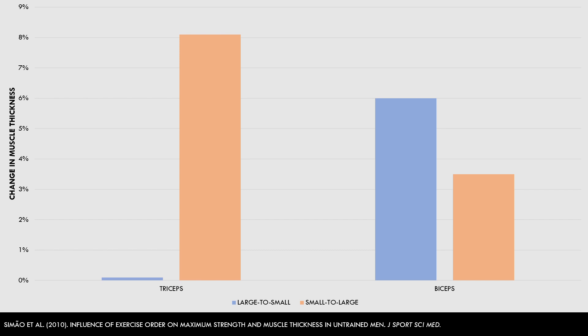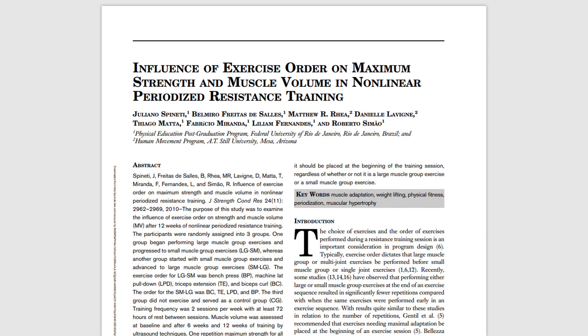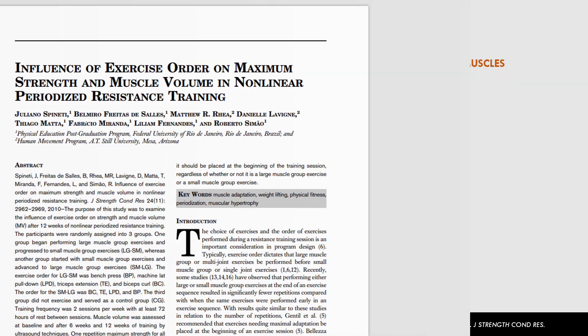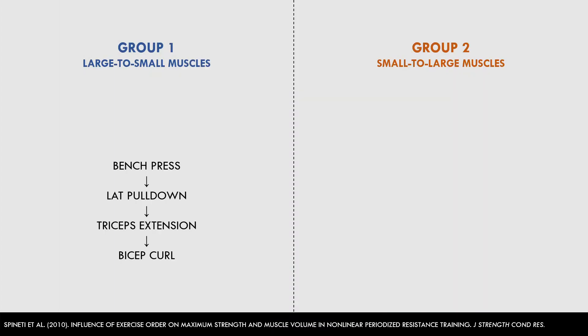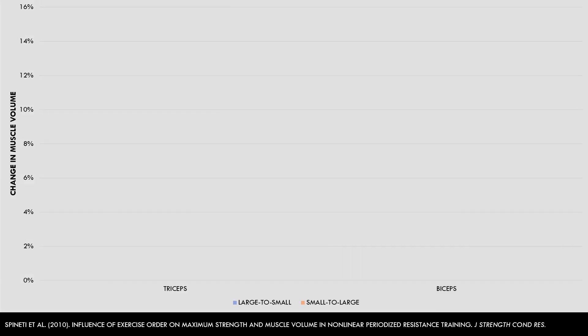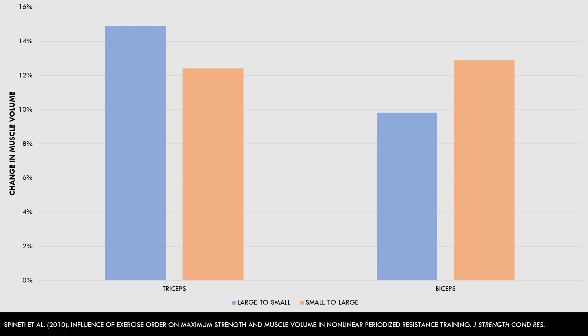Another study used an almost identical training protocol. One group performed bench press, lat pulldown, triceps extension, and bicep curls in that order. The other group performed bicep curls, tricep extensions, lat pulldown, and bench press in the opposite order. Although this study intended to compare training large versus small muscle groups in different orders, it also compared the order of compound versus isolation lifts. Just like the rest of the research on exercise order, strength gains were superior for exercises performed first, while there was no significant difference in hypertrophy outcomes.